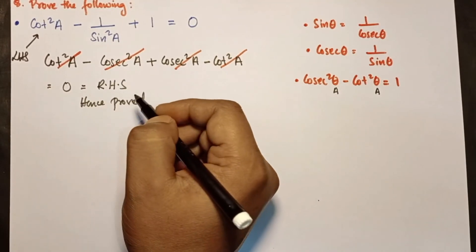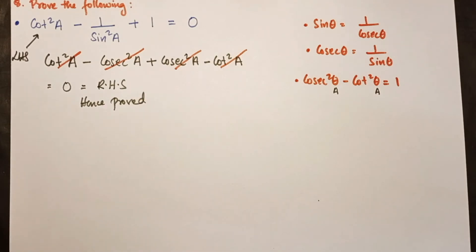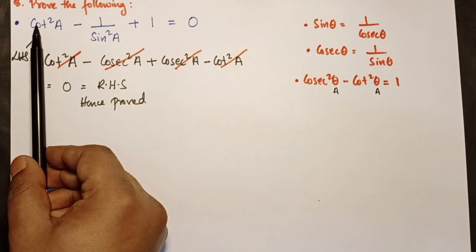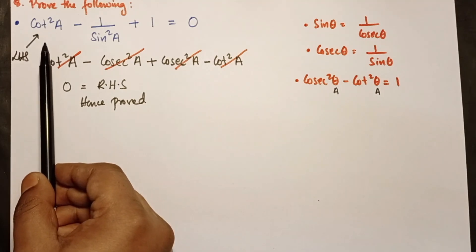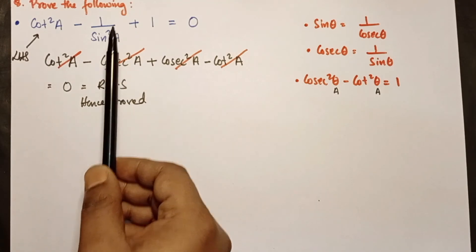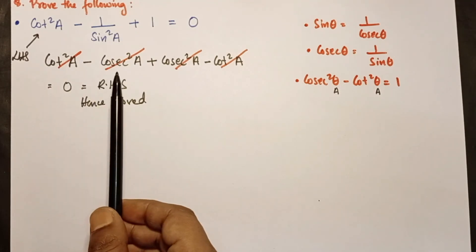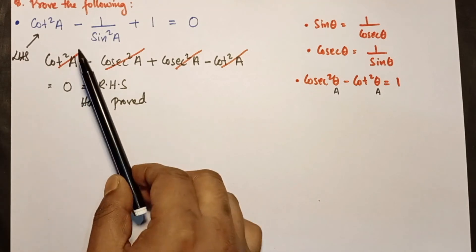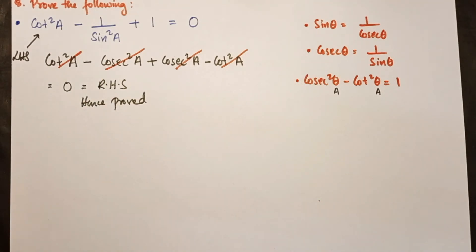This question is worth three marks and is important. Many students take the longer route by writing cot as cos/sin and doing LCM, which is very lengthy. Simply knowing and applying the formula makes it quick and easy. Trigonometry is easy once you are perfect with the formulas.